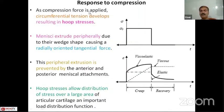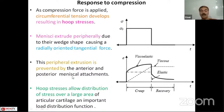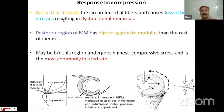As compression force is applied, circumferential tension develops, leading to hoop stresses. The menisci are extruded peripherally due to their wedge shape, causing radially oriented tangential forces. This peripheral extrusion is prevented by the anterior and posterior meniscal root attachments. Hoop stresses allow distribution of stress over a larger area of the articular surface — an important load distribution function. If there is a radial tear, this can disrupt the circumferential fiber and lead to loss of hoop stresses, resulting in a dysfunctional meniscus.